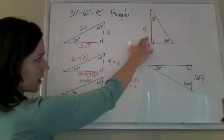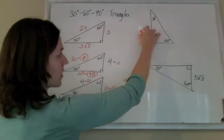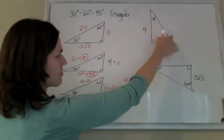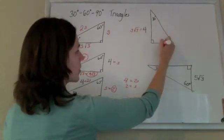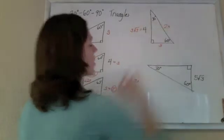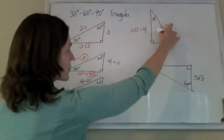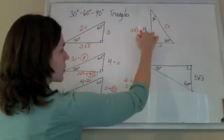If they give me this triangle, here they gave me the longer leg. That's kind of the not-so-nice one. That's the S root 3 part. And again, the shorter leg is just S, and the hypotenuse is 2S. So if S root 3 equals 4, I have to figure out what S is.